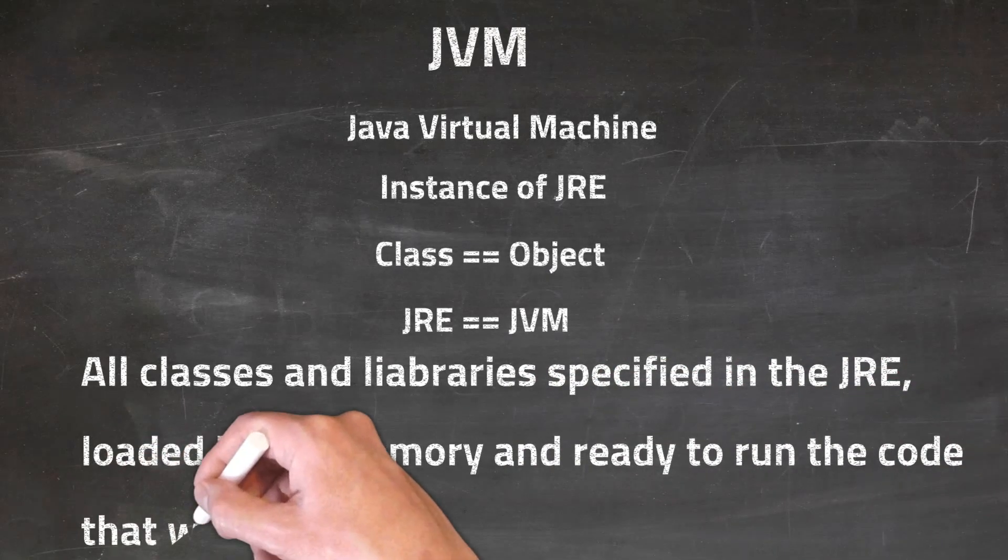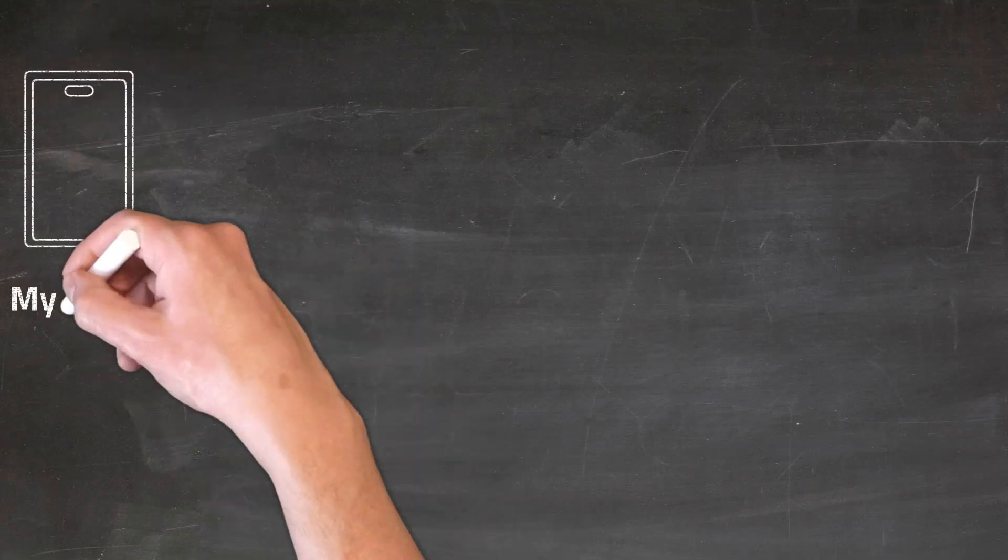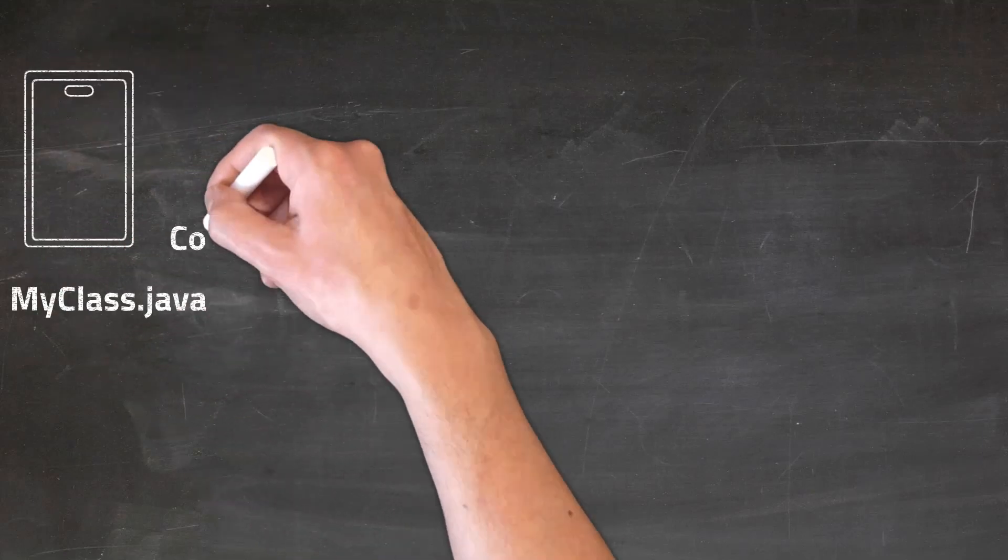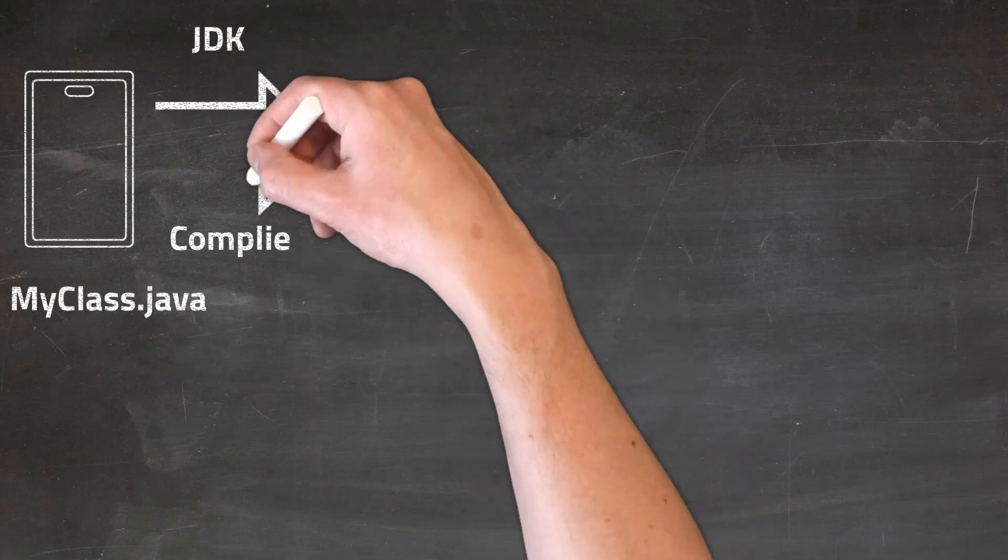Now suppose that you create a file and you call it MyClass.java. When you try to compile this file, you will use the JDK, and the JDK will compile it to MyClass.class file.